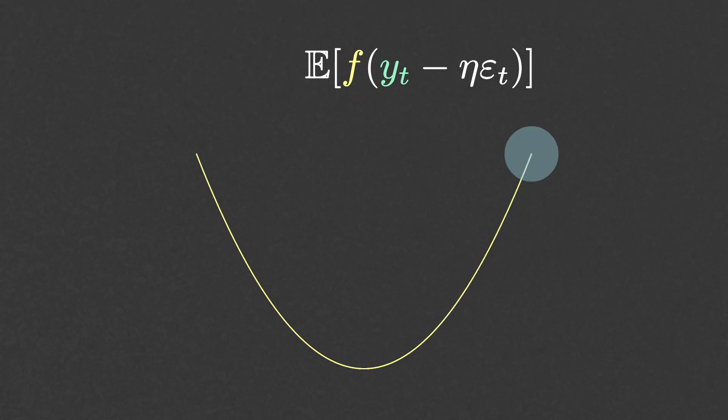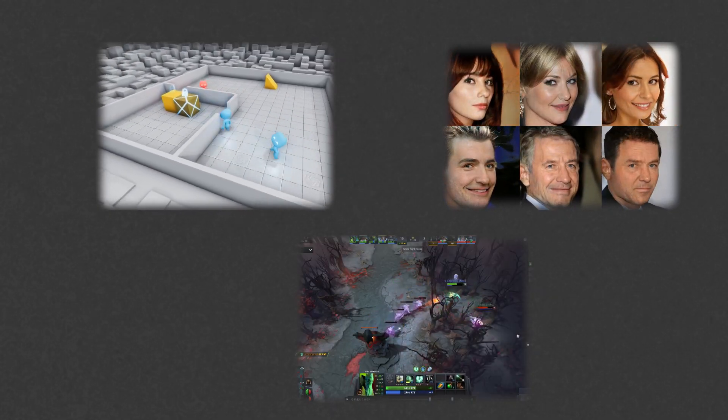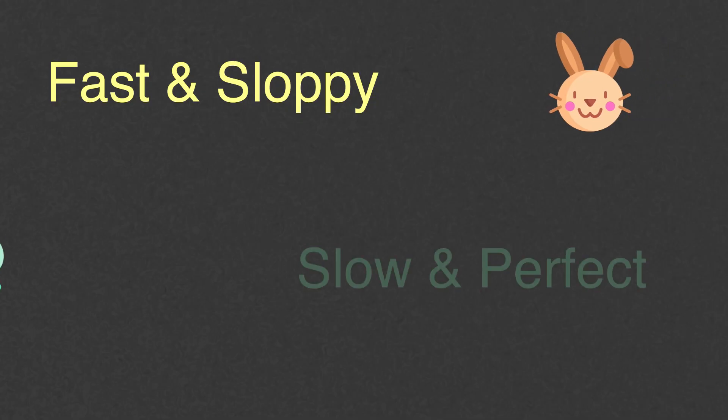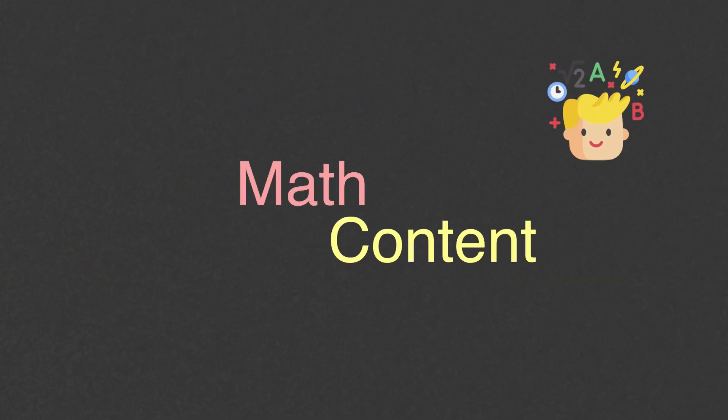To conclude this video, let me just point out that Stochastic Gradient Descent is by no means a miracle solution. It still suffers from some of the same problems of gradient descent, it is just that empirically people have realized that it tends to give better results for a wide variety of machine learning applications. And the moral of the story is that fast and sloppy is often better than slow and perfect. I know, you come for math content but you leave with life lessons.